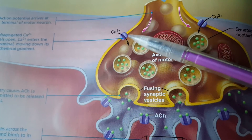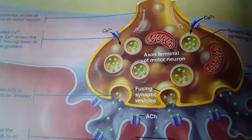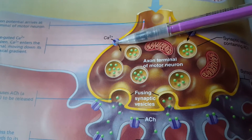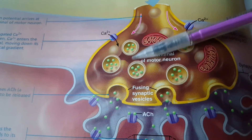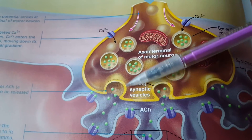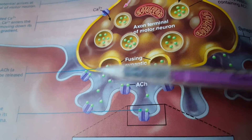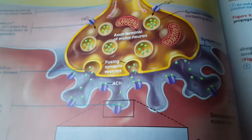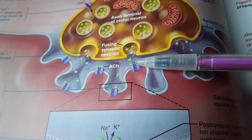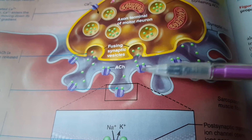When those calcium voltage-gated channels open, calcium comes in, and that triggers the synaptic vesicles — which are full of acetylcholine — to fuse their membranes with the membrane at the end of the axon, releasing acetylcholine into the synaptic cleft of the myoneural junction by way of exocytosis.